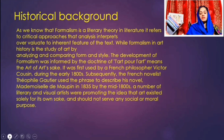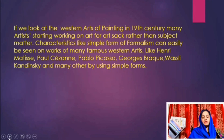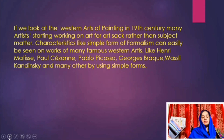Subsequently, the French novelist Théophile Gautier used the phrase to describe his novel Mademoiselle de Maupin in 1835. By the mid 18th century, a number of literary and visual artists were promoting the idea that art existed solely for its own sake and should not serve any social or moral purpose. Looking at western painting in the 19th century, many artists started working on art for art's sake rather than subject matter. Characteristics of simple formalism can easily be seen in works of famous western artists like Henri Matisse, Paul Cézanne, Pablo Picasso, Georges Braque, and Wassily Kandinsky, who used simple form instead of detailed works.